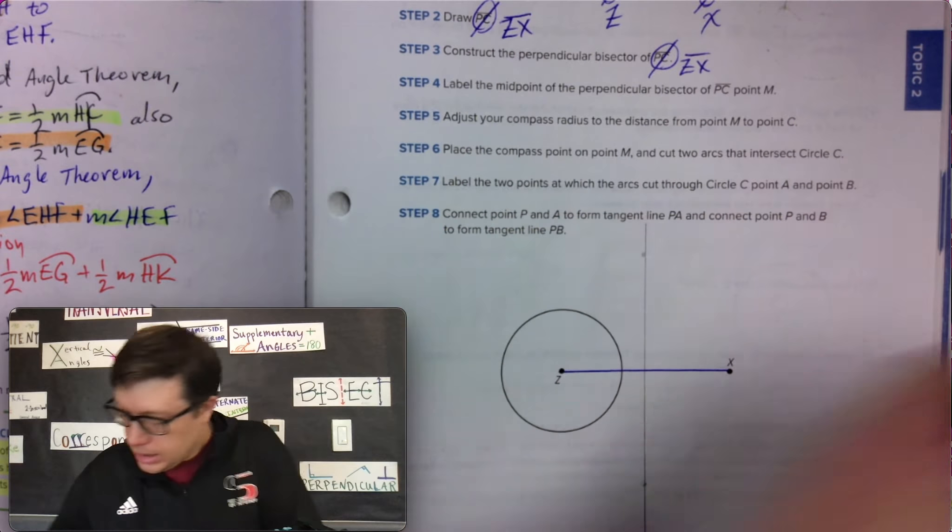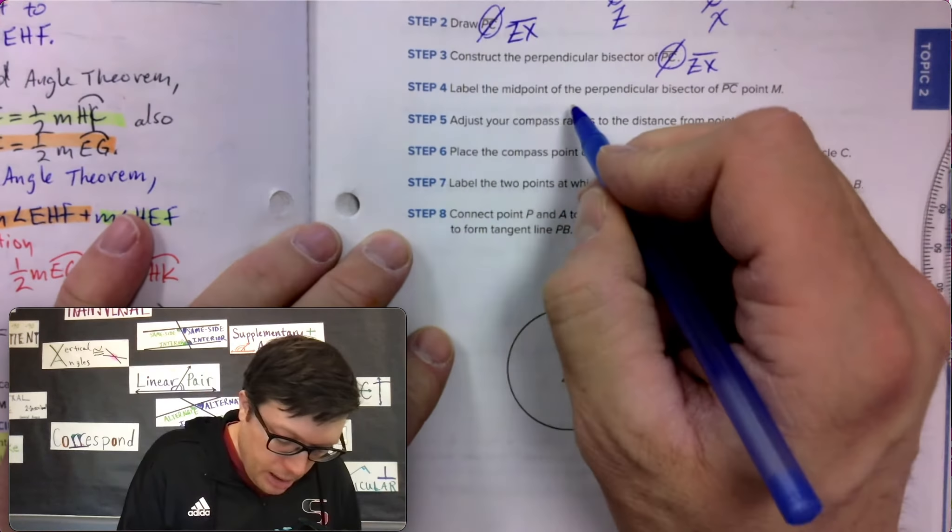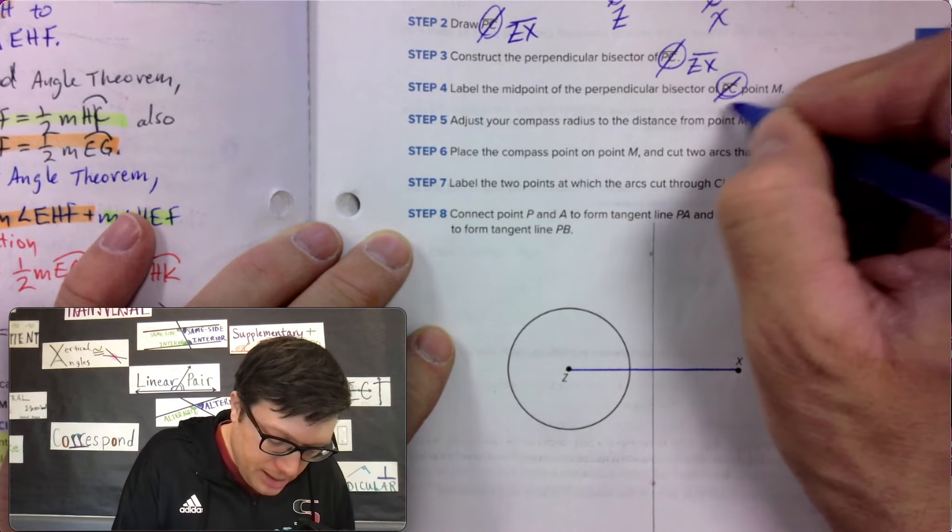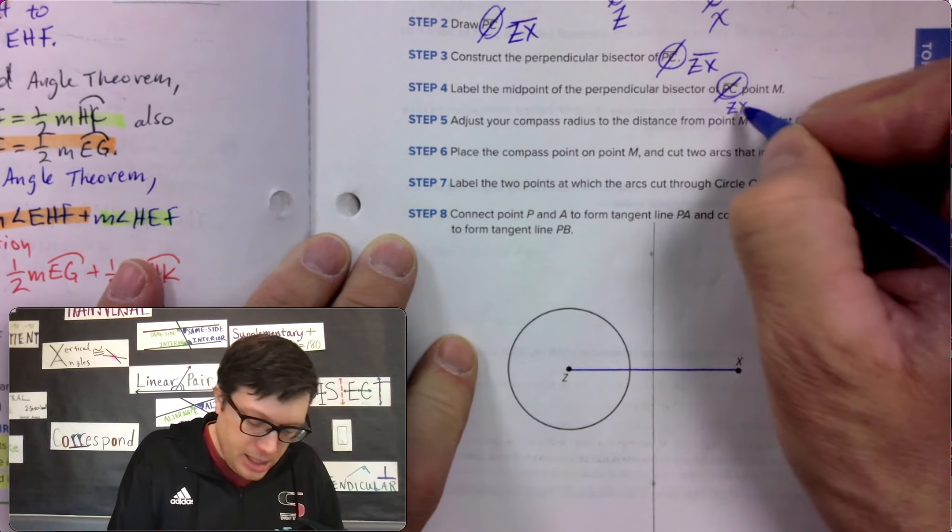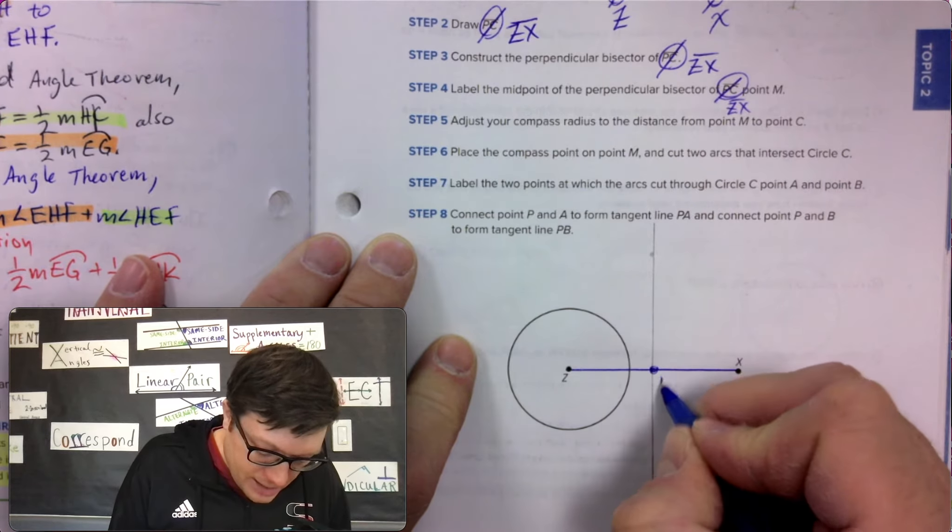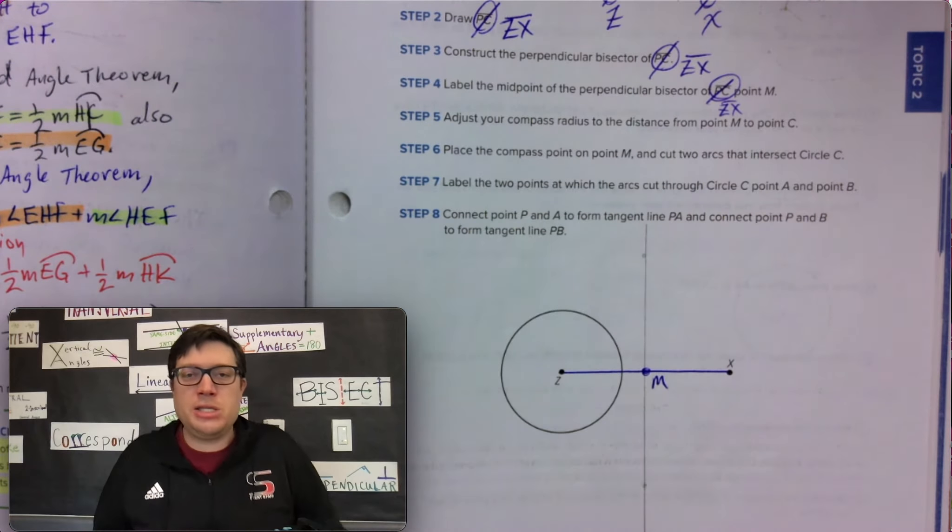Now, next up, label the points on the perpendicular bisector, not PC, actually it's ZX, but we are going to label this as M. That's not an issue. We get to continue with M.